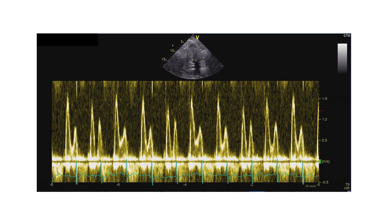Here we can clearly see that the patient has a very high E wave and a low A wave with a relatively steep deceleration time. This would point to the fact that the patient has diastolic dysfunction, probably a restrictive filling pattern with elevated filling pressures. We can take a look at that as well.